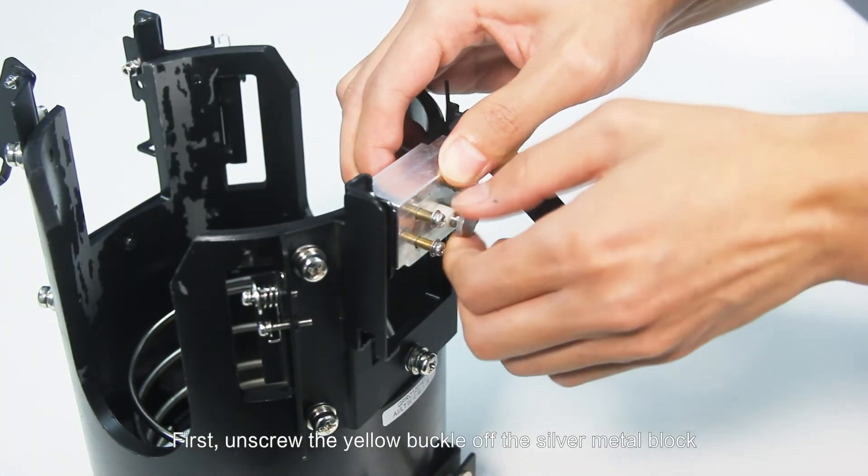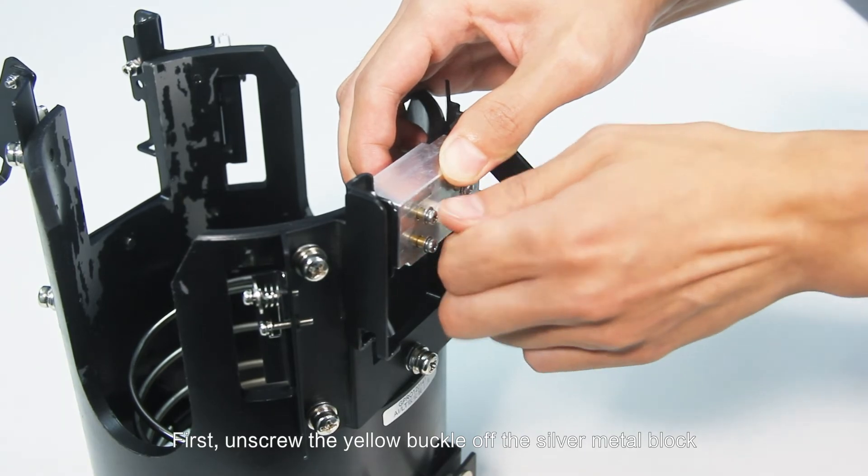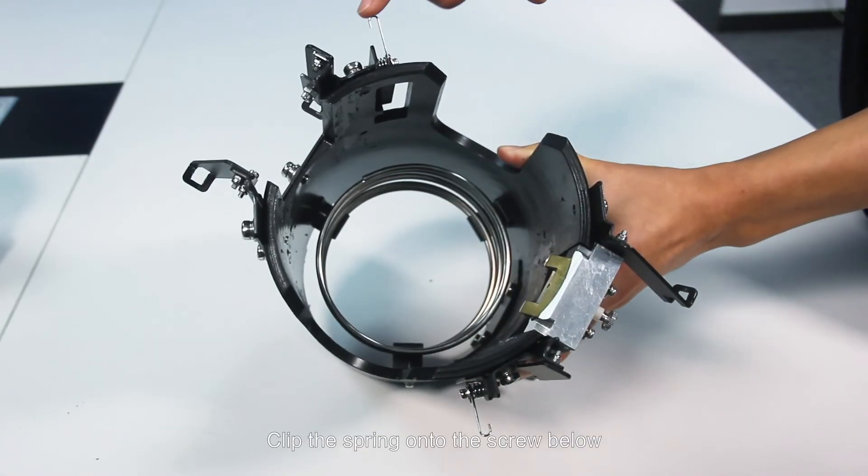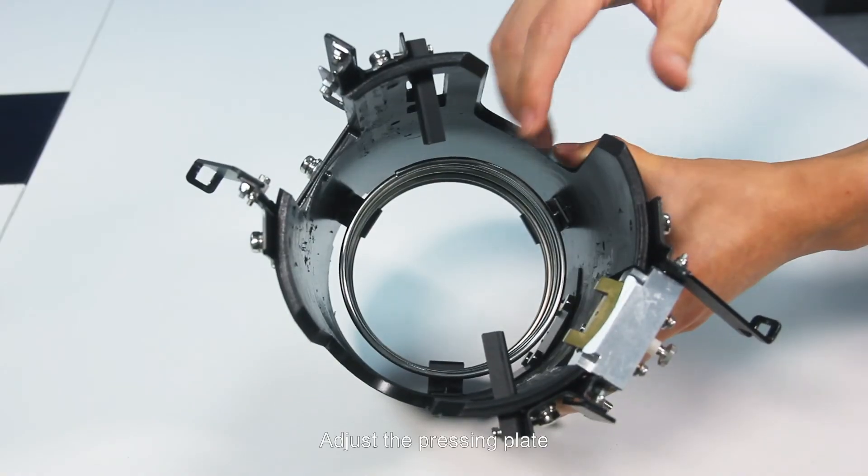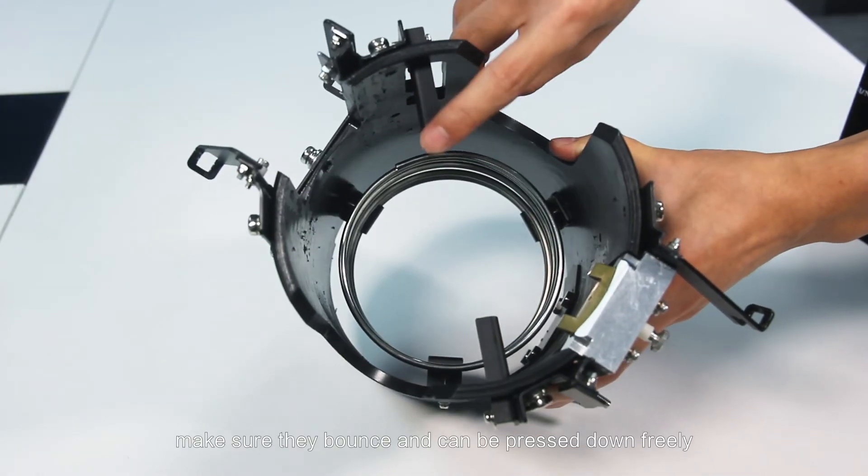First unscrew the yellow buckle off the silver metal block. Clip the spring onto the screw below. Adjust the pressing plate. Make sure they bounce and can be pressed down freely.